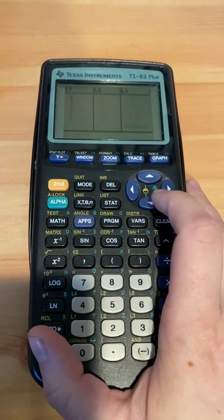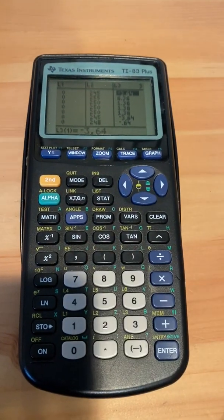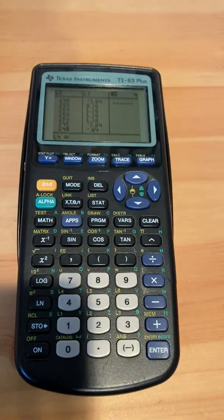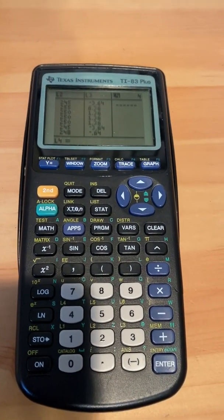All right, the next thing that we're going to do is we're going to find the predicted amount. Okay, so now we're going to go over to list four. Make sure that list four is highlighted.